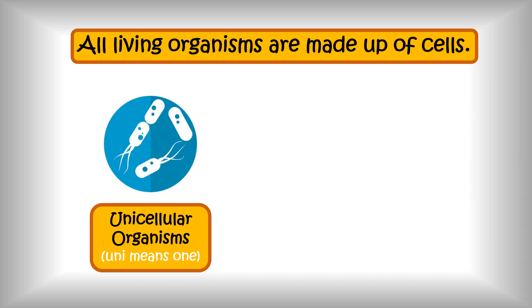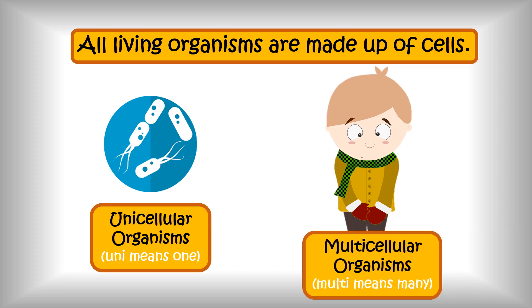Other organisms are made up of many cells, and so they are called multicellular organisms. For example, human beings and animals like cats, dogs, and cows.